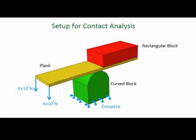The setup consists of three parts: a plank, a block with a semicircular surface on one side which I shall refer to as the curved block, and a block with flat surfaces which I shall refer to as the rectangular block. The curved block is fixed on the bottom, and the plank is fixed at one end making it a cantilever.